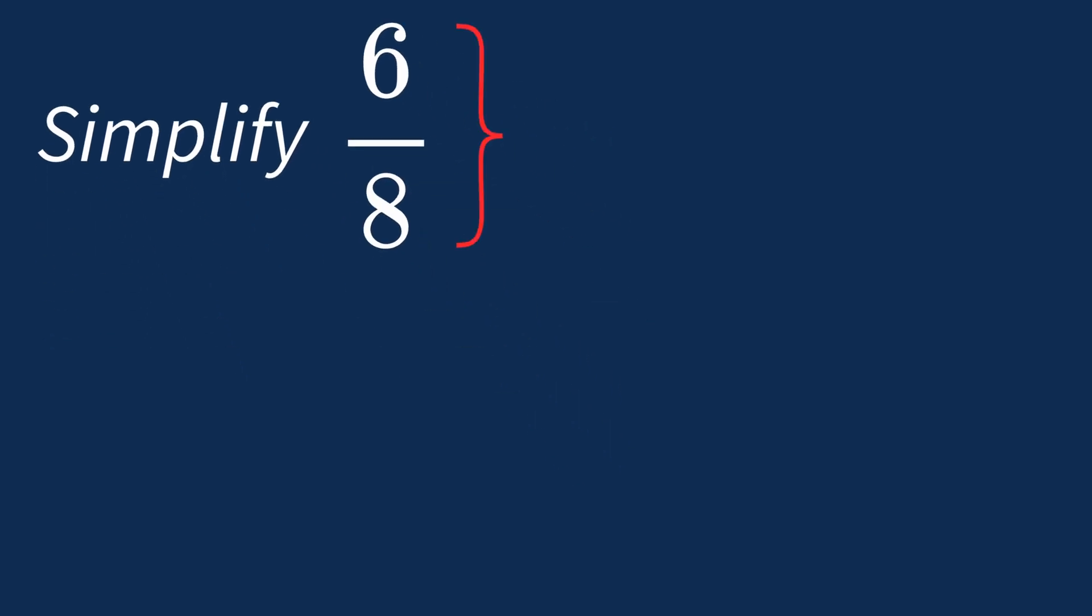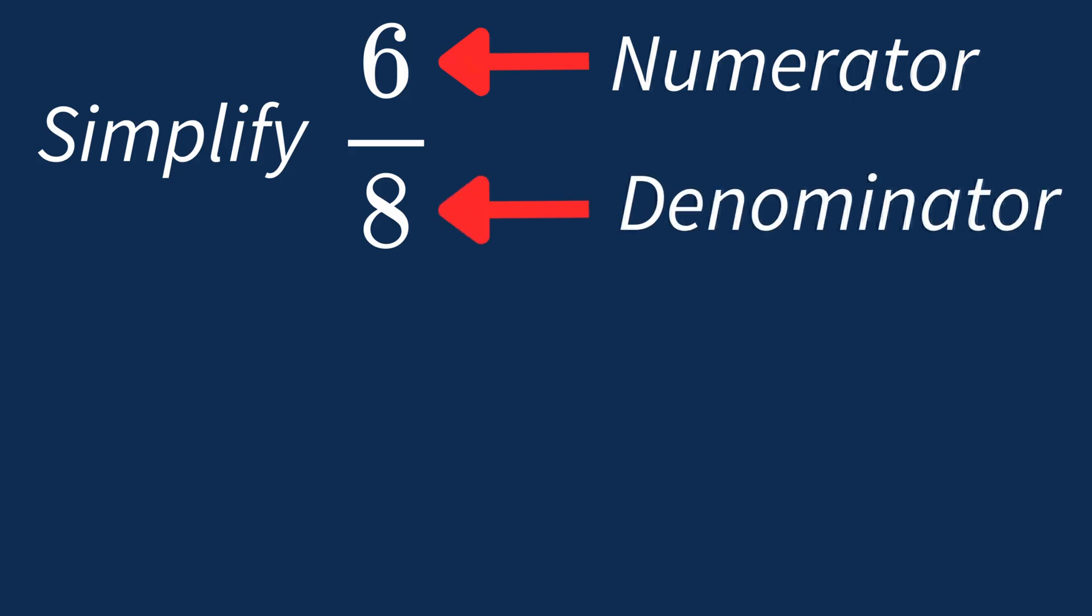To simplify 6 over 8, we start by looking for the common factors between the top number, the numerator, and the bottom number, the denominator.